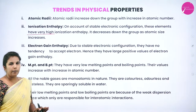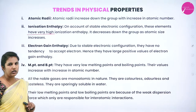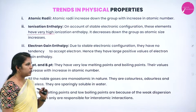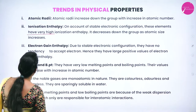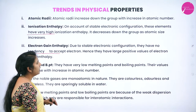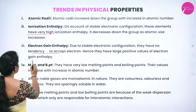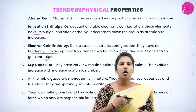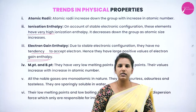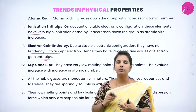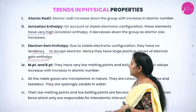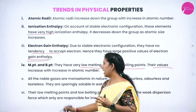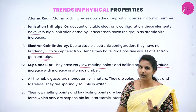For electron gain enthalpy: even though group 18 elements have completely filled electrons in their valence shell, due to stable electronic configuration, they have no tendency to accept electrons; hence they have a large positive electron gain enthalpy. Their melting point and boiling point are very low, and these values increase as we move down the group because of increasing atomic number.